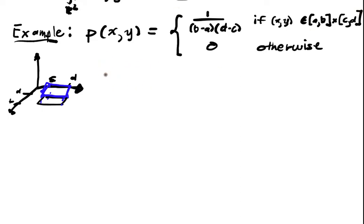We want to verify the hypotheses. First, 1/(B-A)(D-C), as long as we're assuming that B is greater than A and D is greater than C, and 0 are all greater than or equal to 0. Since this only takes two values, we only need to check that these are greater than or equal to 0.